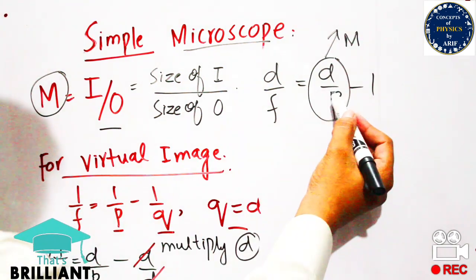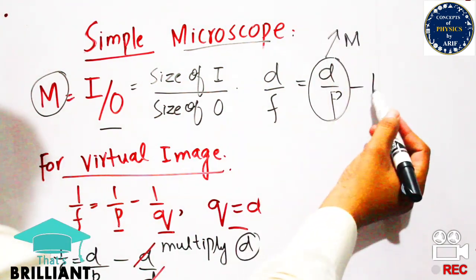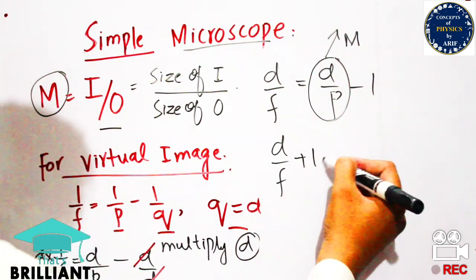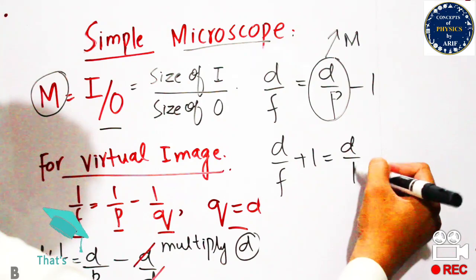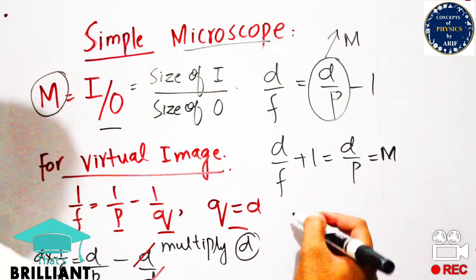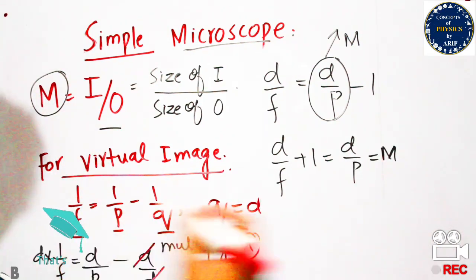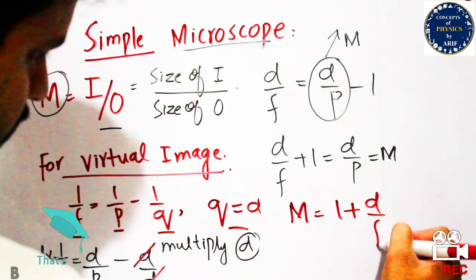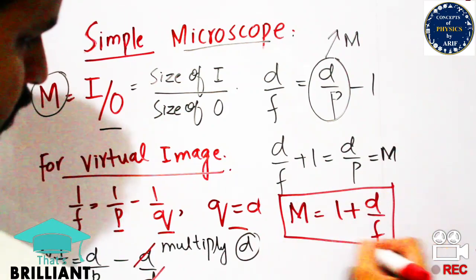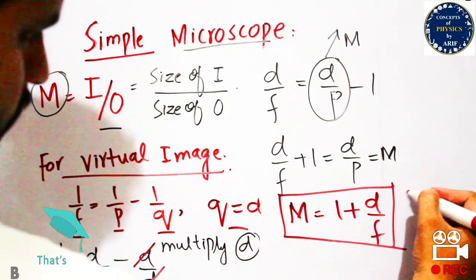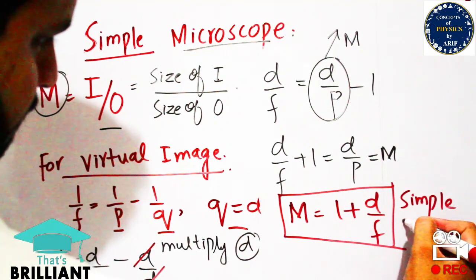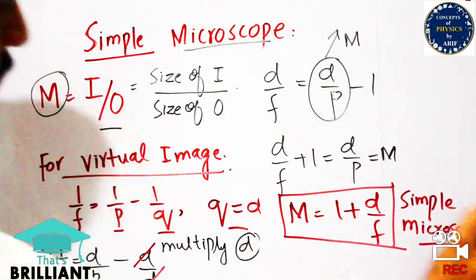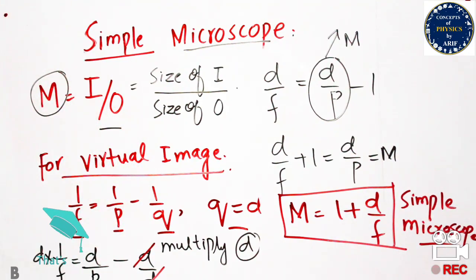So the final formula for the magnification of a simple microscope is M = 1 + D/F. This is the final formula. A simple microscope is a practical application of an optical instrument in which only one convex lens is used.